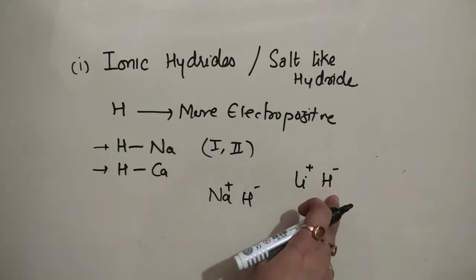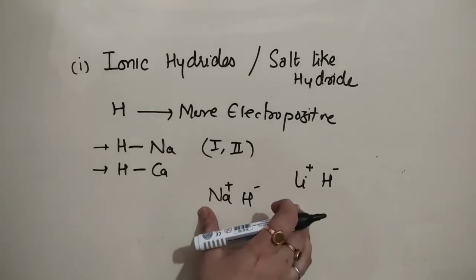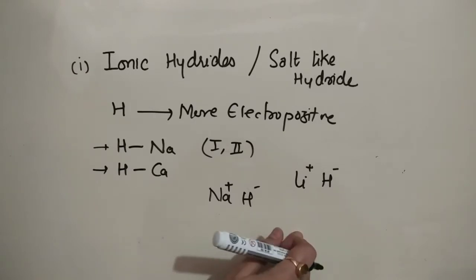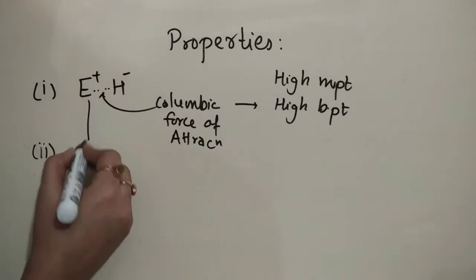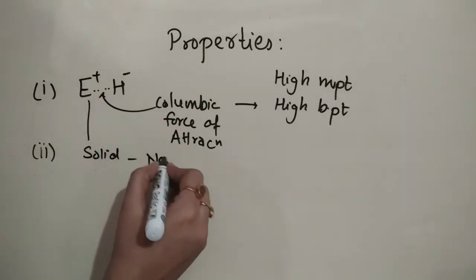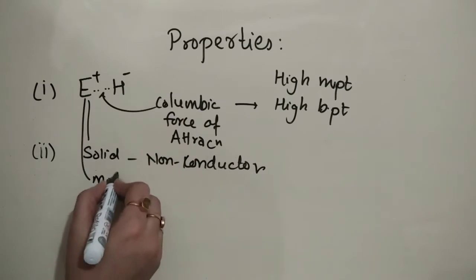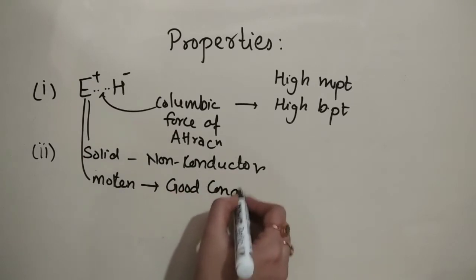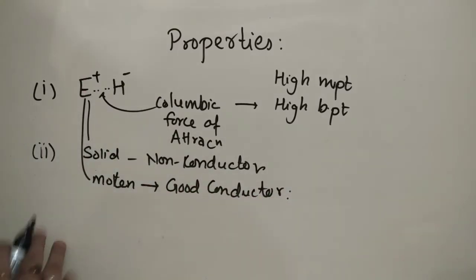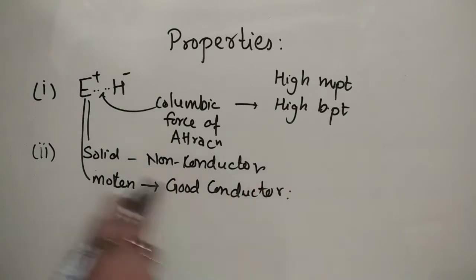The force of attraction between ions in ionic hydrides is similar to that in ionic compounds — that is, electrostatic force of attraction. Because of this force of attraction, they possess high melting and boiling points. Other properties are also similar to ionic compounds: in the solid state they are non-conductors (insulators), but in the molten state, since they produce ions, they are good conductors of electricity.